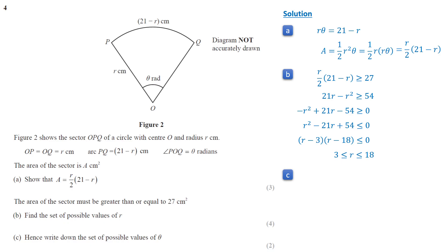Moving on, we express theta in terms of r. Since r·theta equals 21 minus r, theta equals 21 over r minus 1. As r increases, theta decreases. When r equals 3, theta equals 6, which is the maximum value. When r equals 18, theta equals 1 over 6, which is the minimum value. Therefore, theta lies between 1 over 6 and 6.